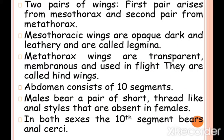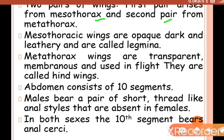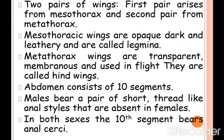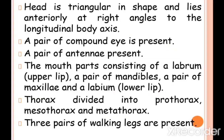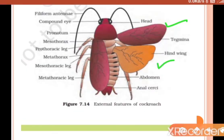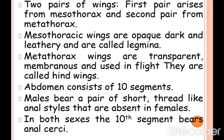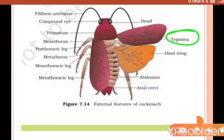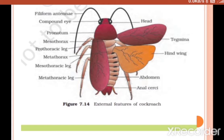Two pairs of wings are present. The first pair arises from the mesothorax and the second pair from the metathorax. The mesothorax wings are opaque, dark, and leathery — they are called tegmina. The second pair, arising from the metathorax, is called hind wings.